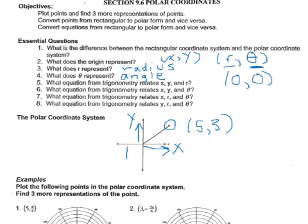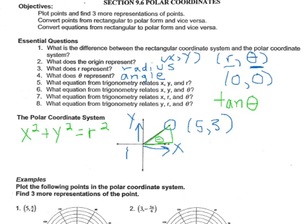The first question asks: what trigonometry equation relates x, y, and r? We've seen this equation many times: x squared plus y squared equals r squared. That is our equation for a circle centered at the origin. The next question: what trigonometry equation relates x, y, and theta? If we look at this little triangle and imagine that angle is theta, the tangent of theta equals y over x. So tan θ = y/x.